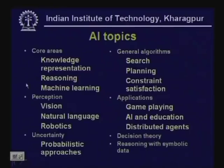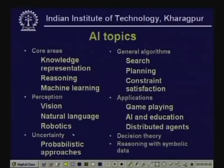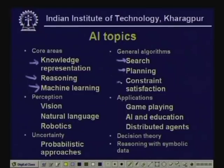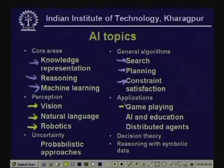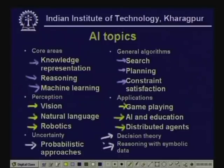Here are some of the topics of AI. In the core areas: knowledge representation, reasoning, machine learning, general algorithms, search, planning, constraint satisfaction, perception, vision, natural language processing, robotics, applications, game playing, AI and education, distributed agents, uncertainty, probabilistic approaches, decision theory, and reasoning with symbolic data. These are some of the topics that people study in AI, and in this course we are going to study most of these topics.